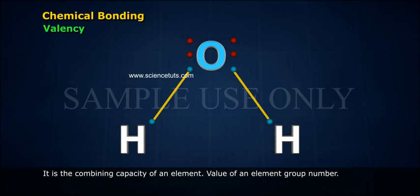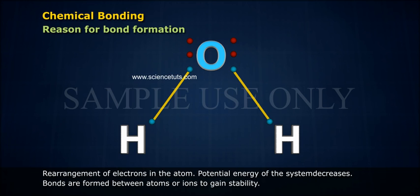Valency of an element is the group number or eight minus the group number. Bonds form due to rearrangement of electrons in the atom. The potential energy of the system decreases. Bonds are formed between atoms or ions to gain stability.